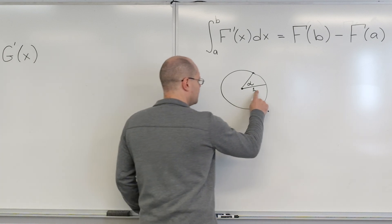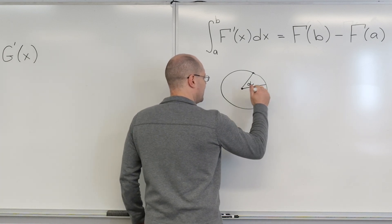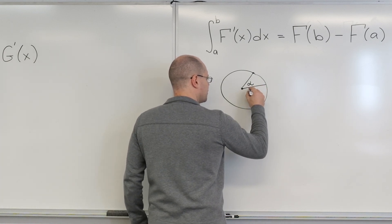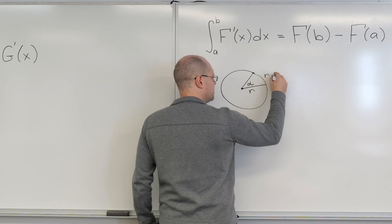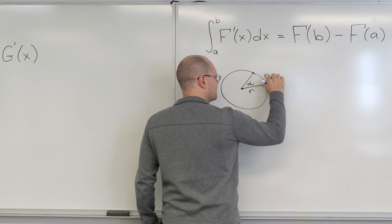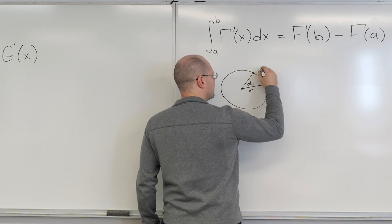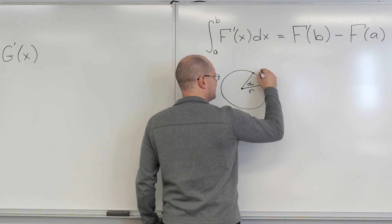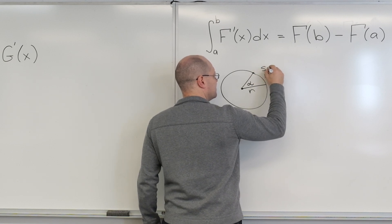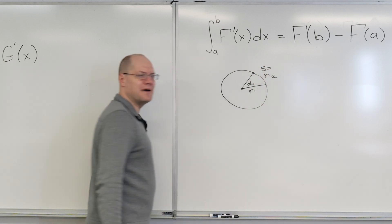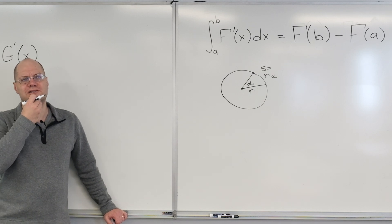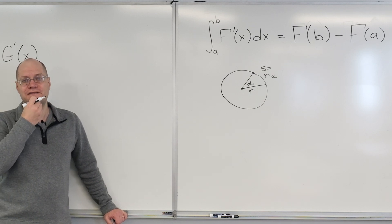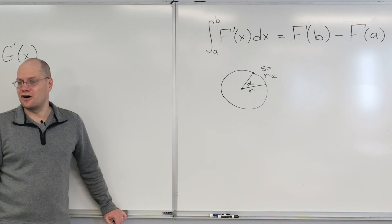If this was a circle of radius R, then the parameter would need to be R·alpha, so a new parameter — then S equals R·alpha. Still not bad. In other words, alpha would need to be S over R.